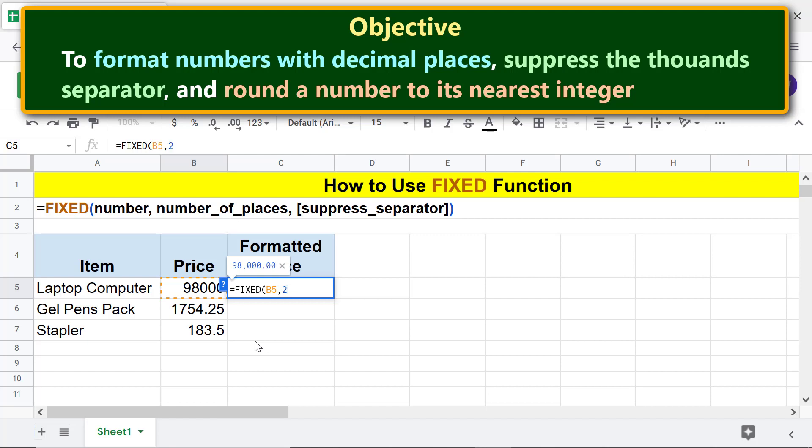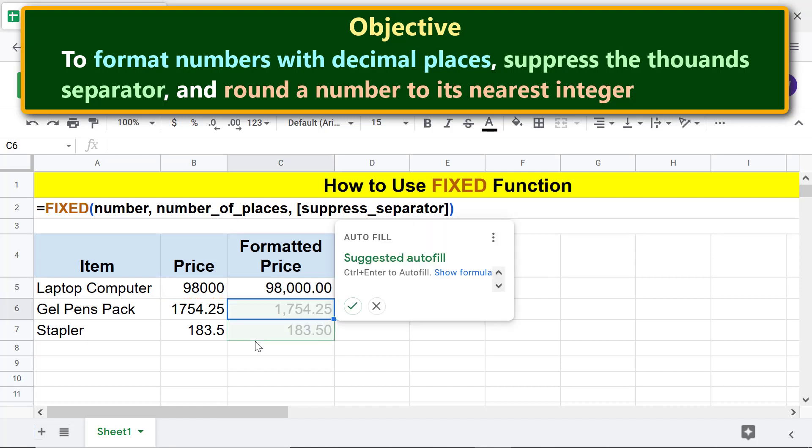Press Enter. Click the checkmark to autofill these cells with the formula. All right, FIXED has formatted the numbers to two decimal places and with a thousands separator.